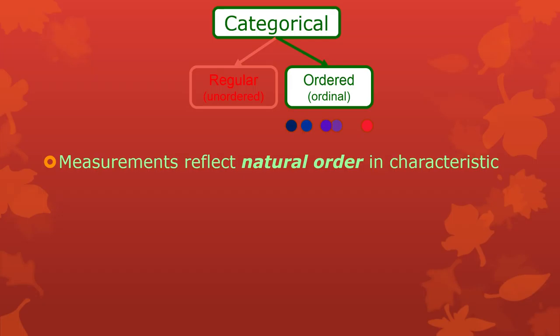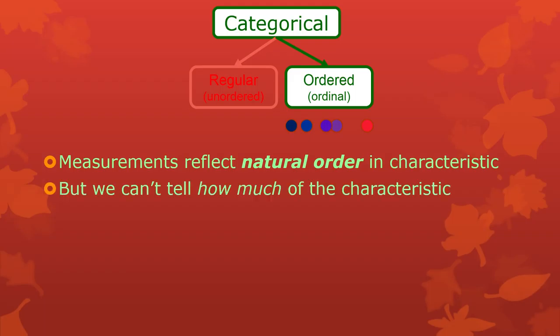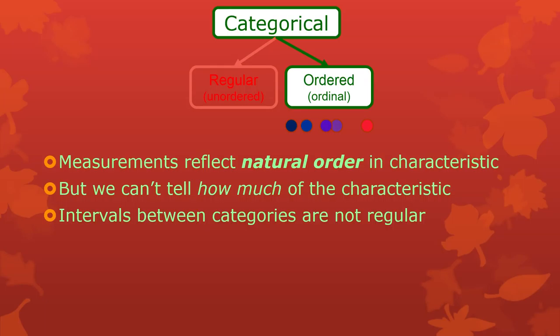If you have a characteristic that is naturally ordered and you recorded that natural order using numbers or something similar, then you have an ordered scale, an ordered categorical scale, an ordinal scale. You know when one characteristic has more of something than the other but you don't know how much more — and that's actually pretty critical because you don't have mathematically regular intervals. The intervals between the categories are not regular, or if they are regular you can't prove that they are, so you better not treat them like that.